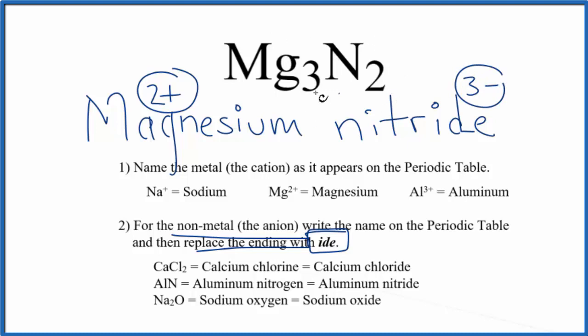So because we have a neutral compound, it all adds up to 0. Three times 2+ is 6+. Three minus times 2 is 6-. These will cancel out and give us a net charge of 0. So that's the formula for magnesium nitride.